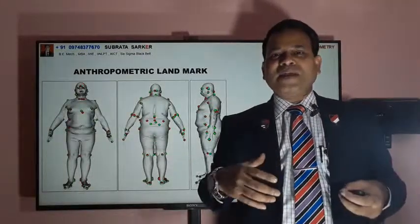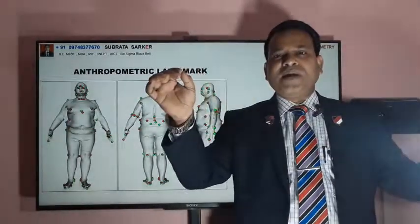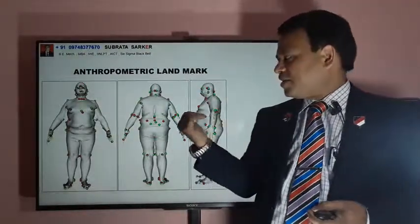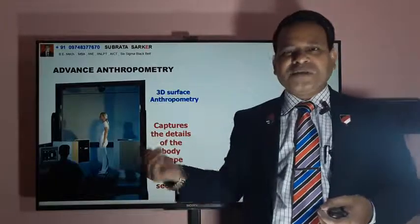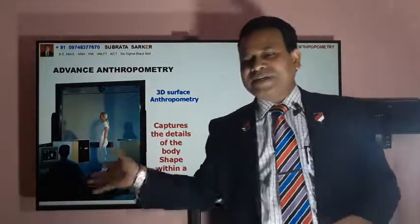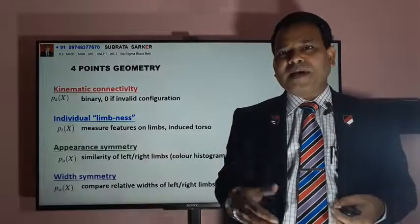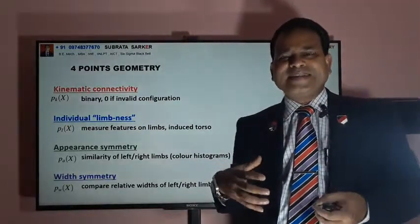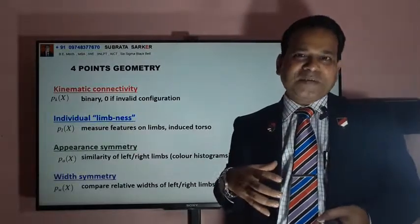There is an anthropometric landmark on the body. For example, at a dark night, if a woman and a man are walking with LED lights placed on certain parts of the body, according to the walking motion we can determine which is female and which is male. This is the anthropometric landmark by which male and female can be distinguished. Today, 3D scanning machines are available. If you stand in front of a 3D scanner for less than one minute, a lot of measurements of your body can be done — fat percentage, height proportionality, body mass index, length proportionality index, and much more. There is four-point geometry measurement in anthropometry, like kinematic connectivity, individual limb segments, appearance symmetry, and width symmetry. There are a lot of calculations involved.